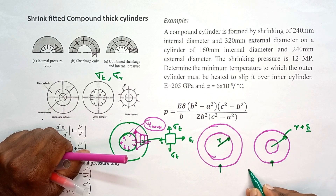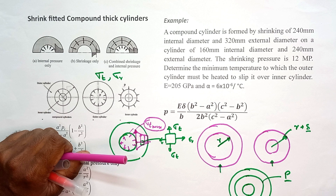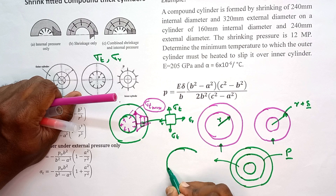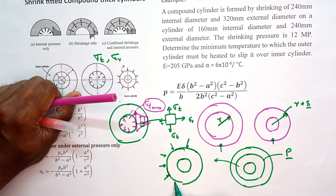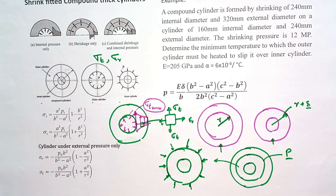When it returns to room temperature, it forms a rigid bond between the two cylinders. Very high pressures develop at the interface — this pressure is called the interface pressure. Because of this interface pressure, if you take the inner cylinder alone, it behaves like a cylinder subject to external pressure only after shrink fitting. This interface pressure causes the inner surface to be negatively stressed.